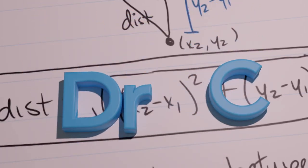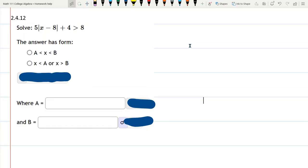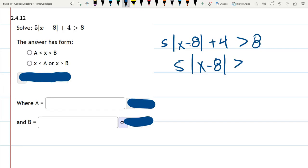We're going to solve this inequality. First thing we're going to do is rewrite it. Now subtract 4 on both sides. So 8 minus 4 is 4. Divide both sides by 5.